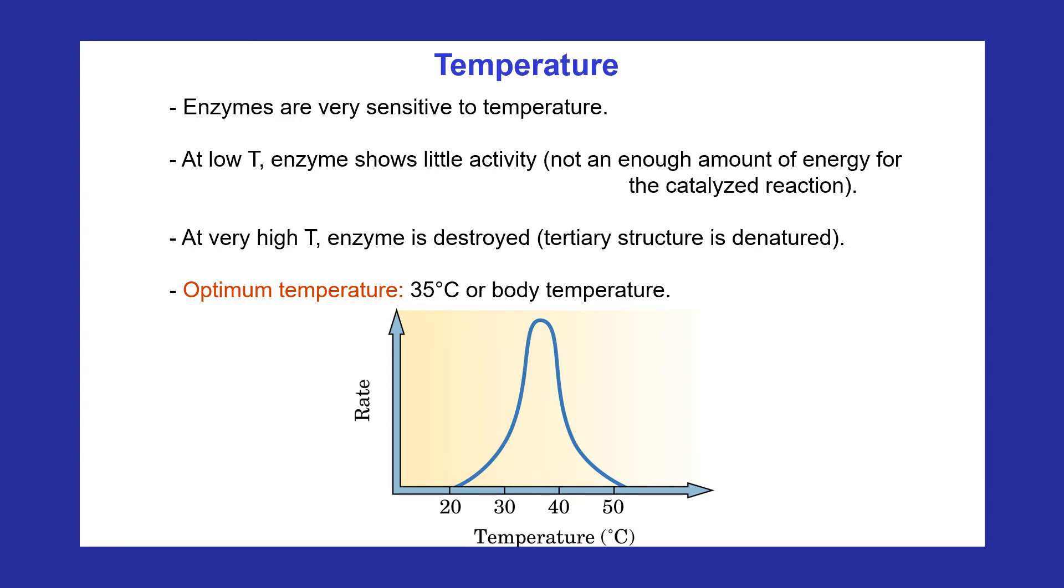At temperatures above 50 degrees Celsius, the tertiary structure and thus the shape of most proteins is destroyed, which causes a loss in enzyme activity. For this reason, equipment in hospitals and laboratories is sterilized in autoclaves, where the high temperatures denature the enzymes in harmful bacteria. We can see the relationship between the rate of reaction and temperature in the figure.